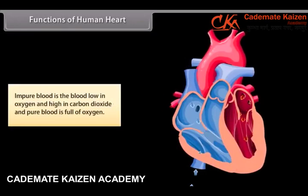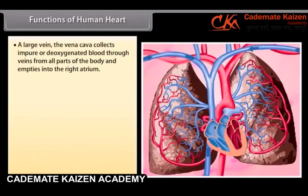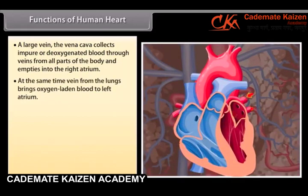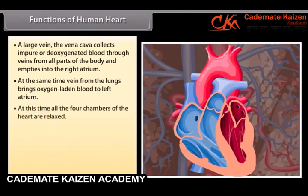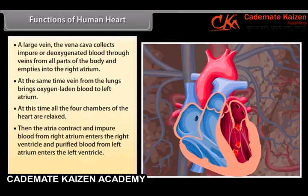Impure blood is the blood low in oxygen and high in carbon dioxide, and pure blood is full of oxygen. A large vein, the vena cava, collects impure and deoxygenated blood through veins from all parts of the body and empties into the right atrium. At the same time, a vein from the lungs brings oxygen-laden blood to the left atrium. At this time, all four chambers of the heart are relaxed. Then, the atria contract and impure blood from the right atrium enters the right ventricle and purified blood from the left atrium enters the left ventricle.